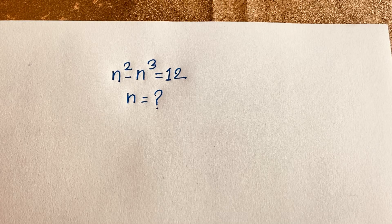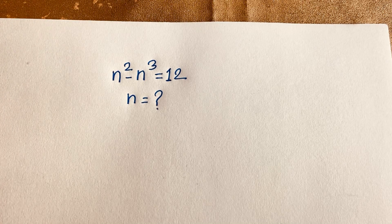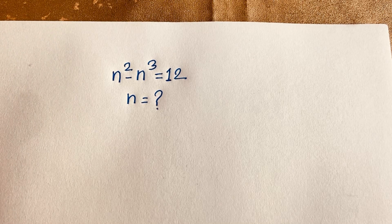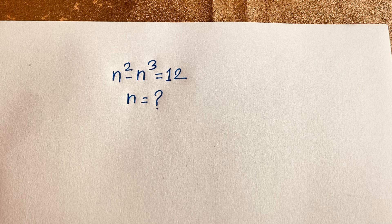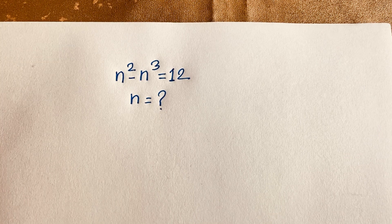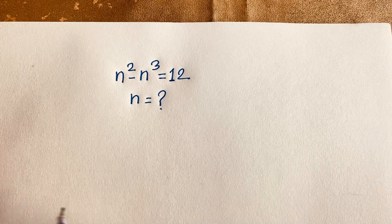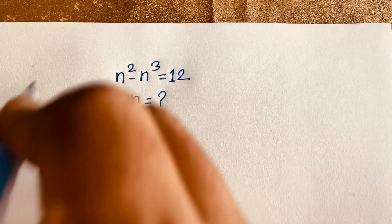Hello everyone. In this video we have solved this German Master Olympiad equation: n to the power 2 minus n cube is equal to 12. We will find out the value of n in this exponential expression. So let's start our question.